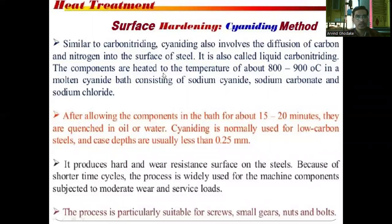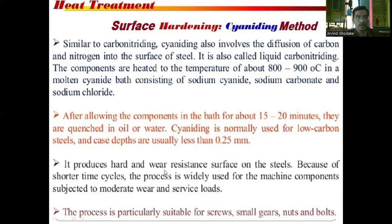The components are heated to a temperature of 800 to 900 degrees Celsius in a molten cyanide bath consisting of sodium cyanide, sodium carbonate, and sodium chloride. After alloying the component in the bath for about 15 to 20 minutes, they are quenched in oil or water. Cyaniding is normally used for low carbon steel, and case depth is usually less than 0.25 mm. It produces a hard and wear-resistant surface on the steels.